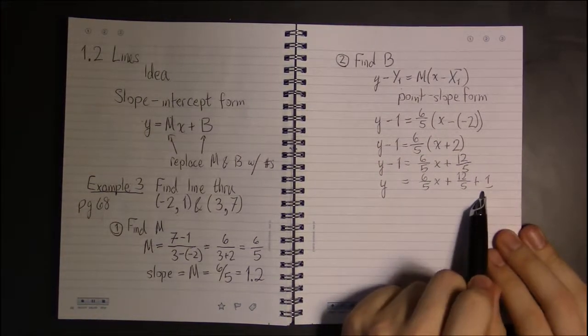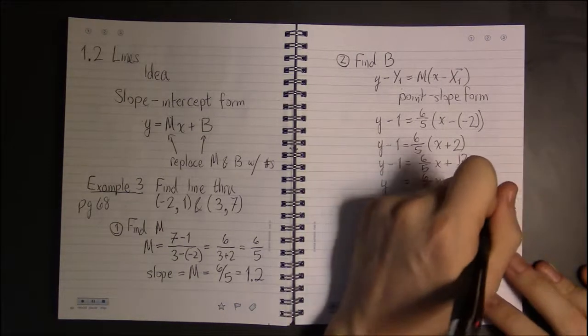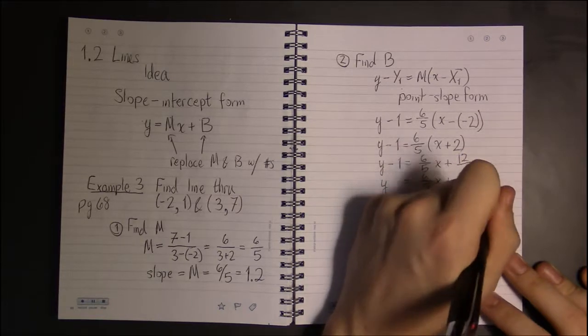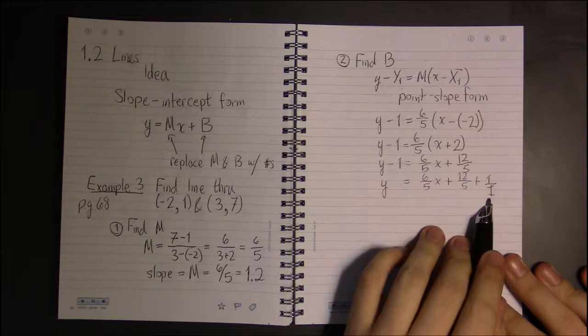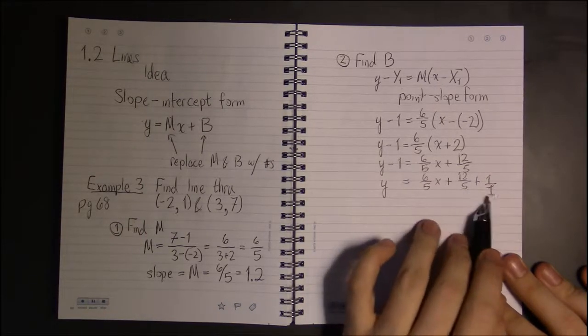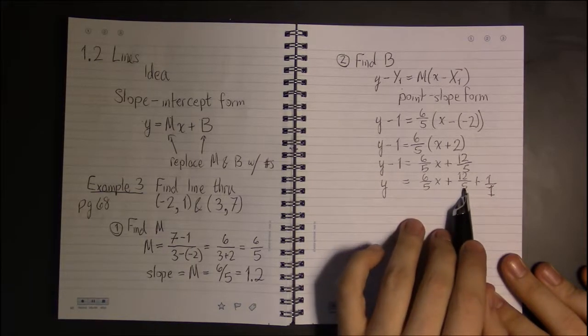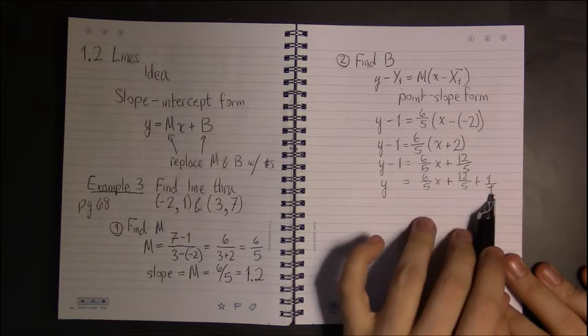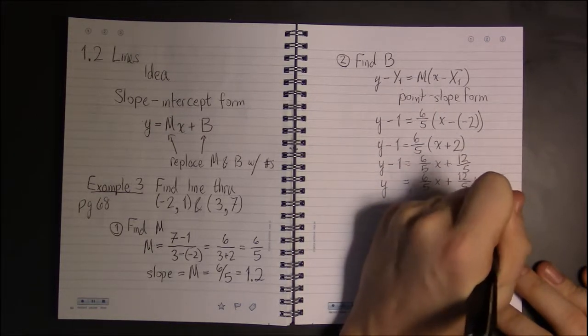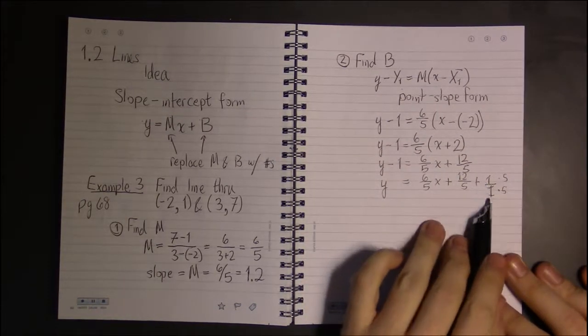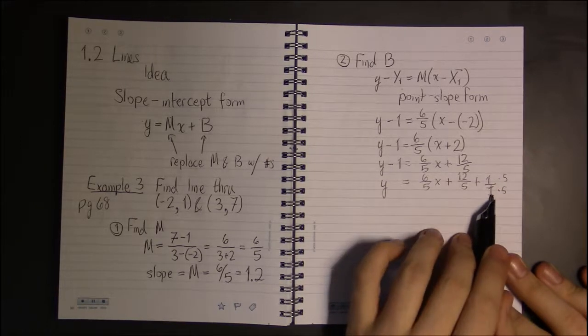Now, in order to add these two fractions together, I need to get a common denominator. I can always write 1 as being 1 over 1. So, the least common denominator here is 5. So, this already has the common denominator. I just have to change the second fraction and multiply top and bottom by 5. And that'll make 5 over 5.